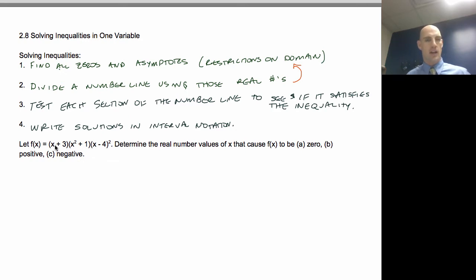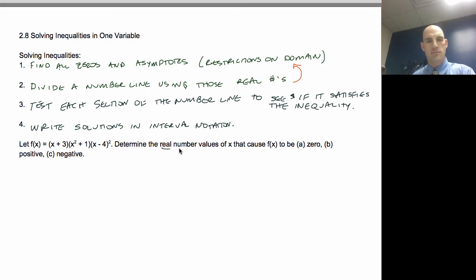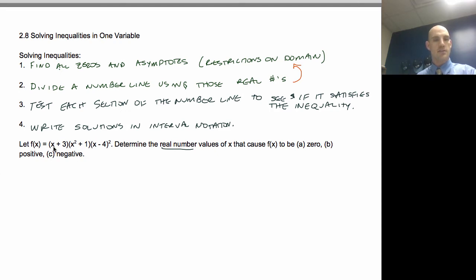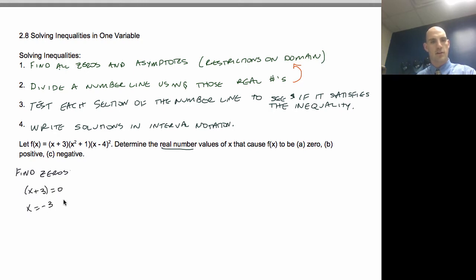Let f of x equal (x + 3)(x² + 1)(x − 4)². It wants us to determine the real number values that cause f(x) to be zero, positive, or negative. First step is to find the zeros. So x + 3 = 0 gives x = −3.